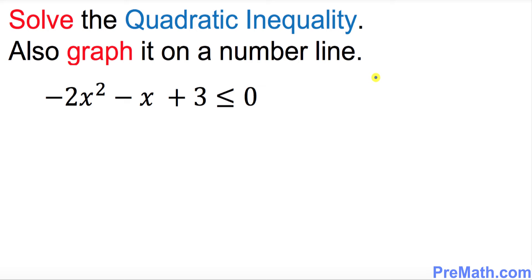The very first thing I want to make sure is that our leading coefficient is positive. As you can see it is negative, so we must make it positive. We are going to multiply across the board — the whole inequality — by a negative sign to make it positive.